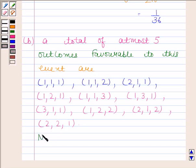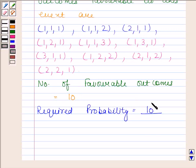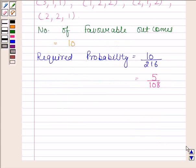So number of favorable outcomes is equal to 10. Hence, our required probability is equal to number of outcomes favorable to this event, that is 10, upon total number of outcomes, that is 216. On simplifying this, we get 5 by 108. So this is our answer to the B part.